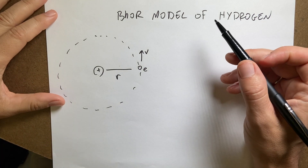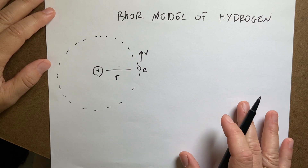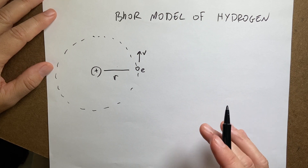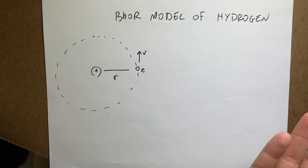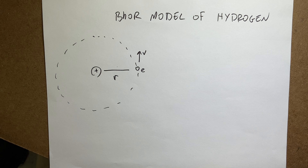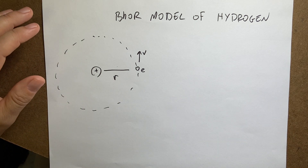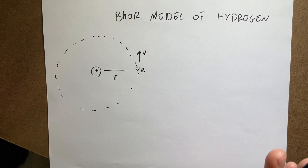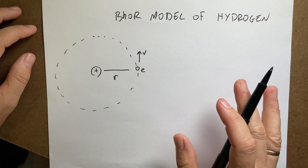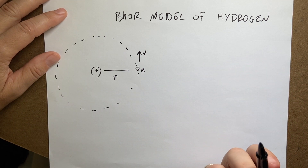This is another question about electric forces. The question is: using the Bohr model of the hydrogen atom, what would the force on the electron be, and what would its velocity be? So let's review the Bohr model of the hydrogen atom quickly.